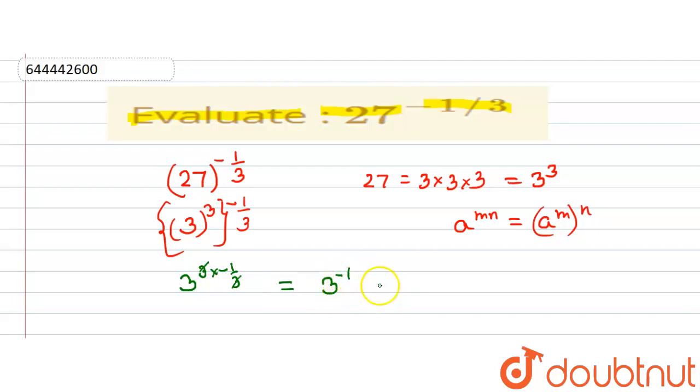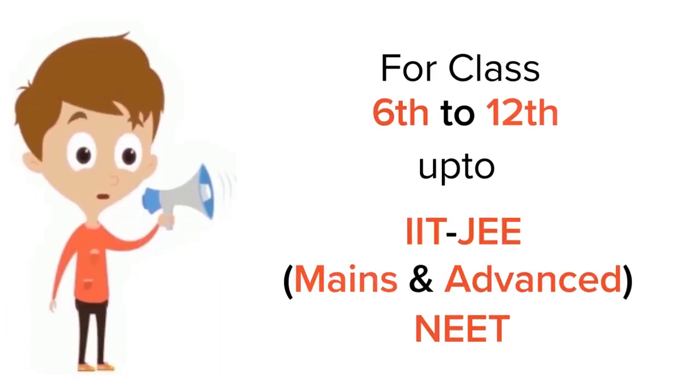So 3 to the power of minus 1 can be written as 1 by 3. So the answer to this question is 1 by 3. Thank you.